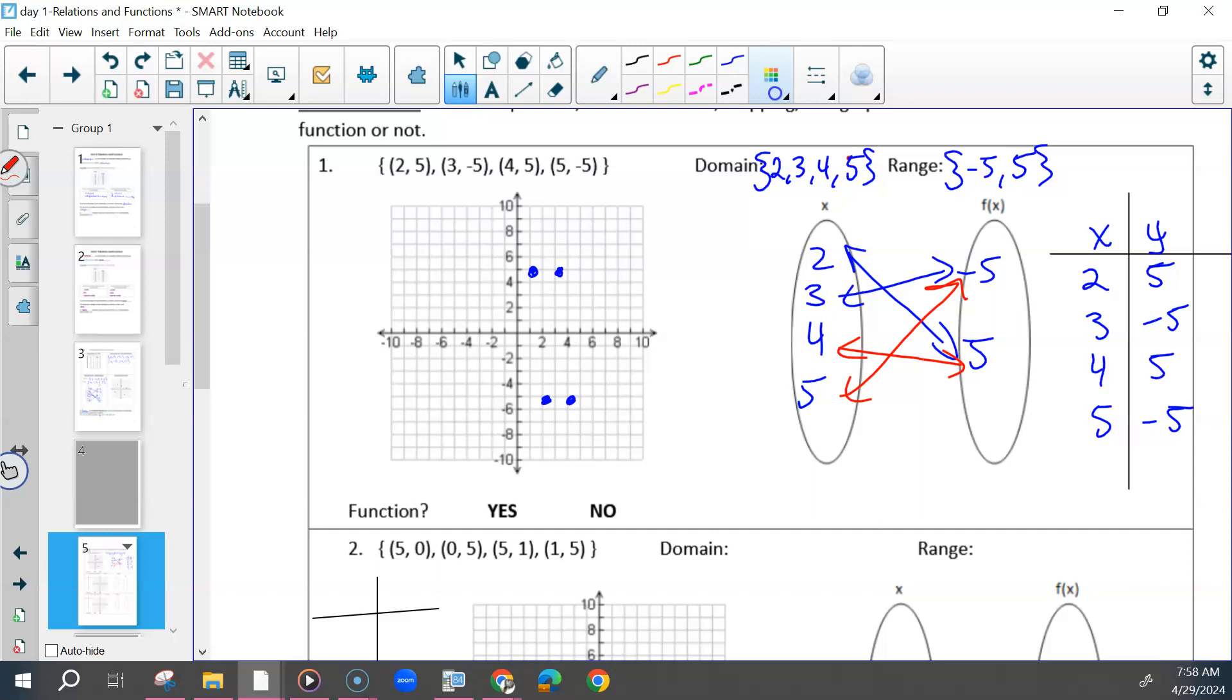In your tables you always want your x's in order, the y's always correlate to whatever the x's are, but you want your x's in order. Do you have any questions about the table, the graph, the mapping?